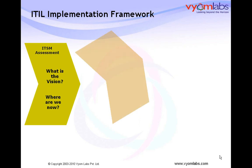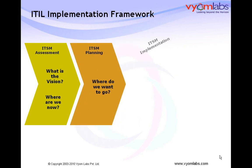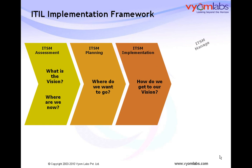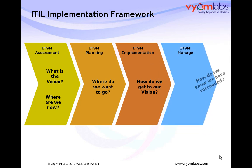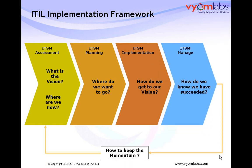So when one is taking the ITIL initiative, what are the typical stages through which the project goes? There are 4 stages and then there is a continual improvement cycle. The first stage is Assessment, second is Planning, third is Implementation, and fourth is Manage. We will go into a little more detail on these various stages of the ITIL implementation cycle.